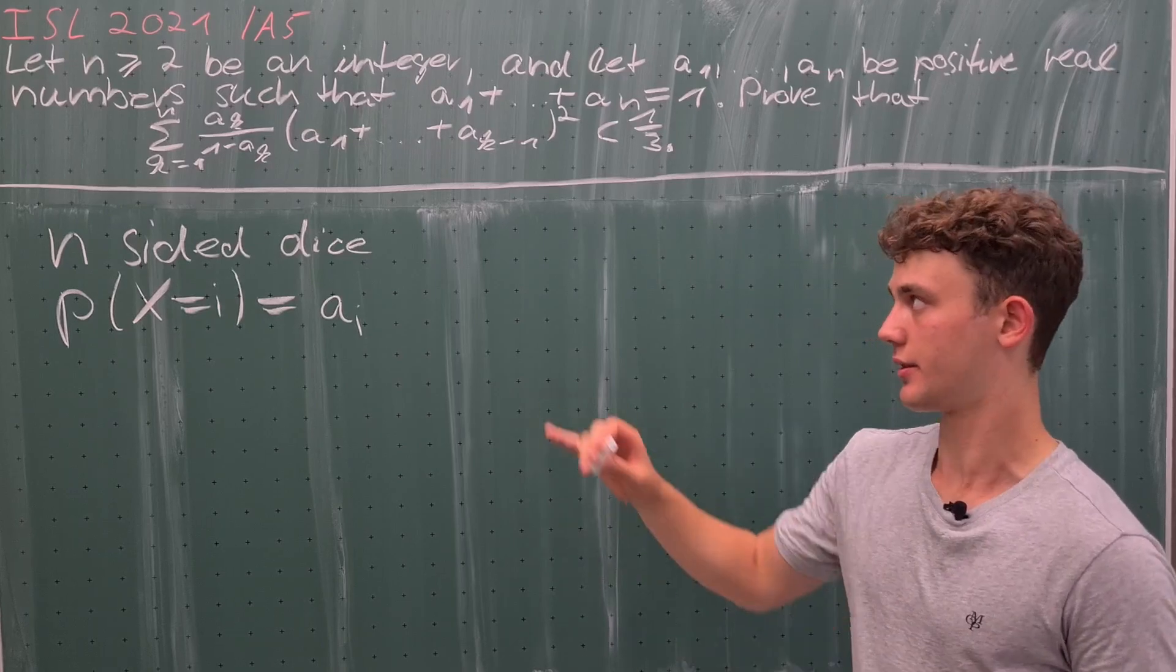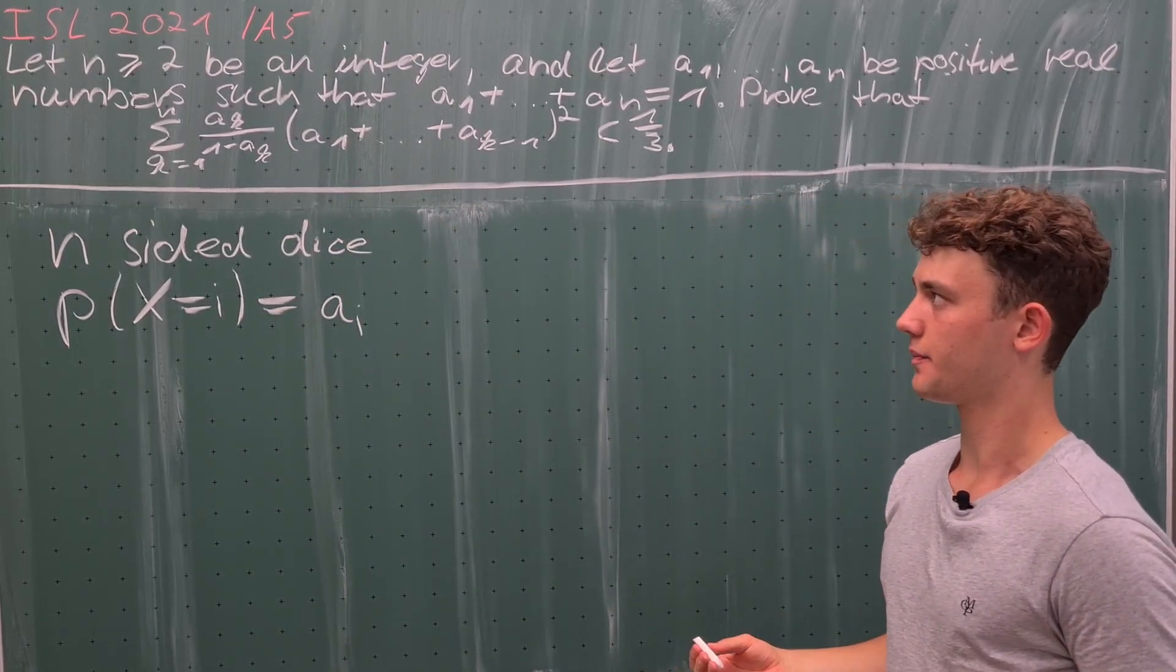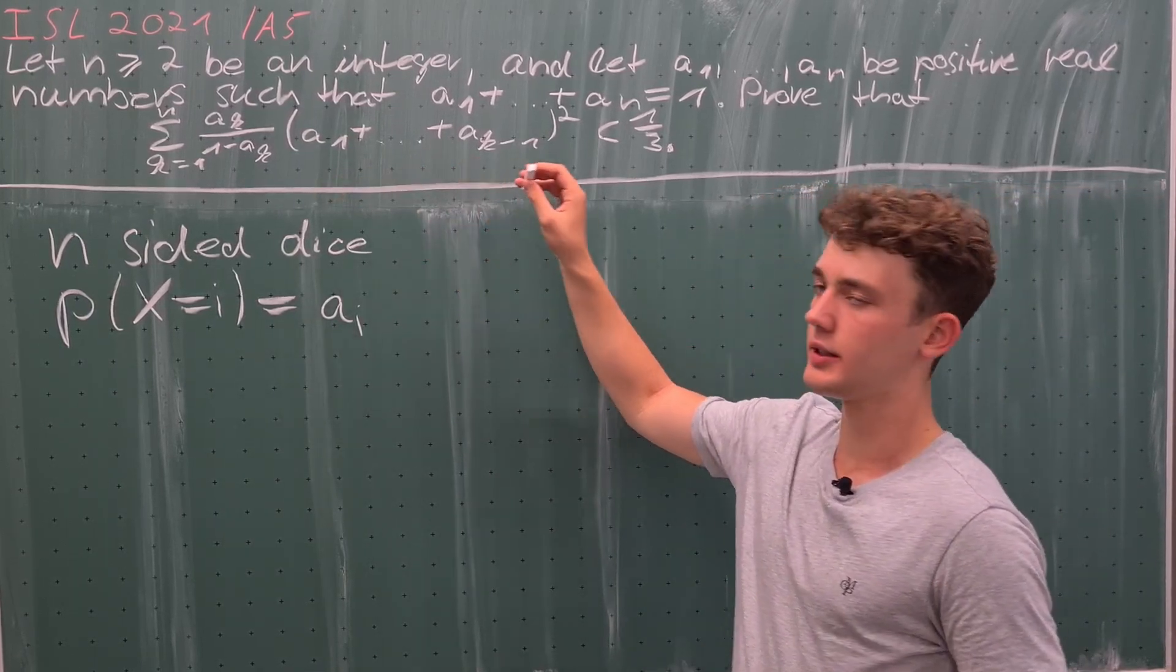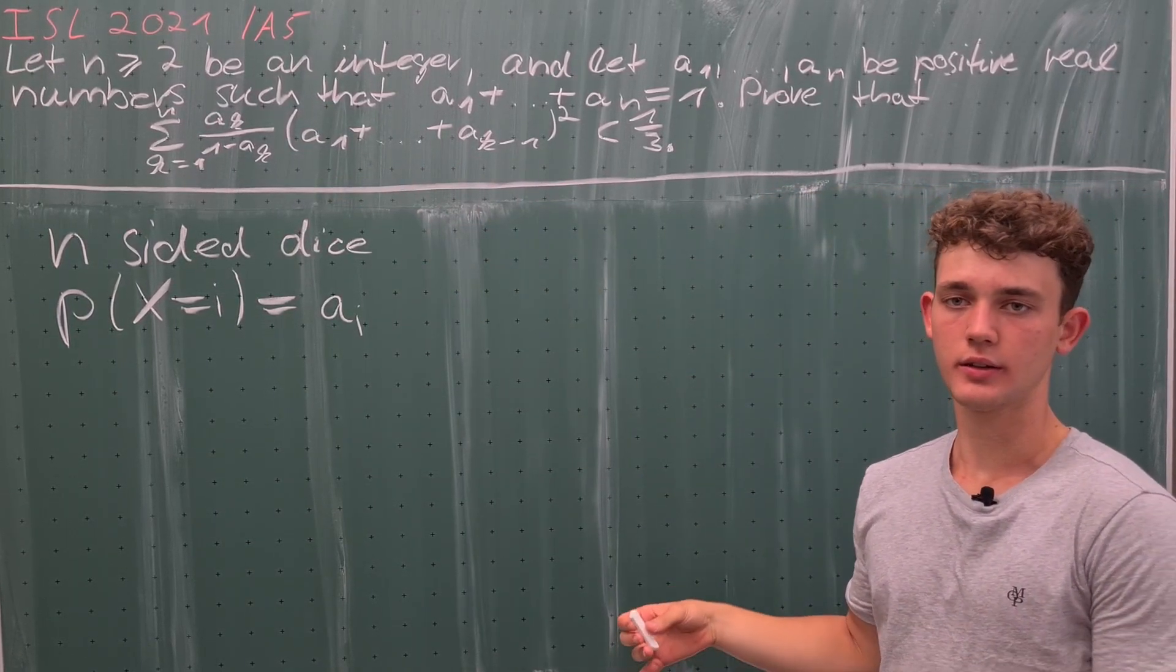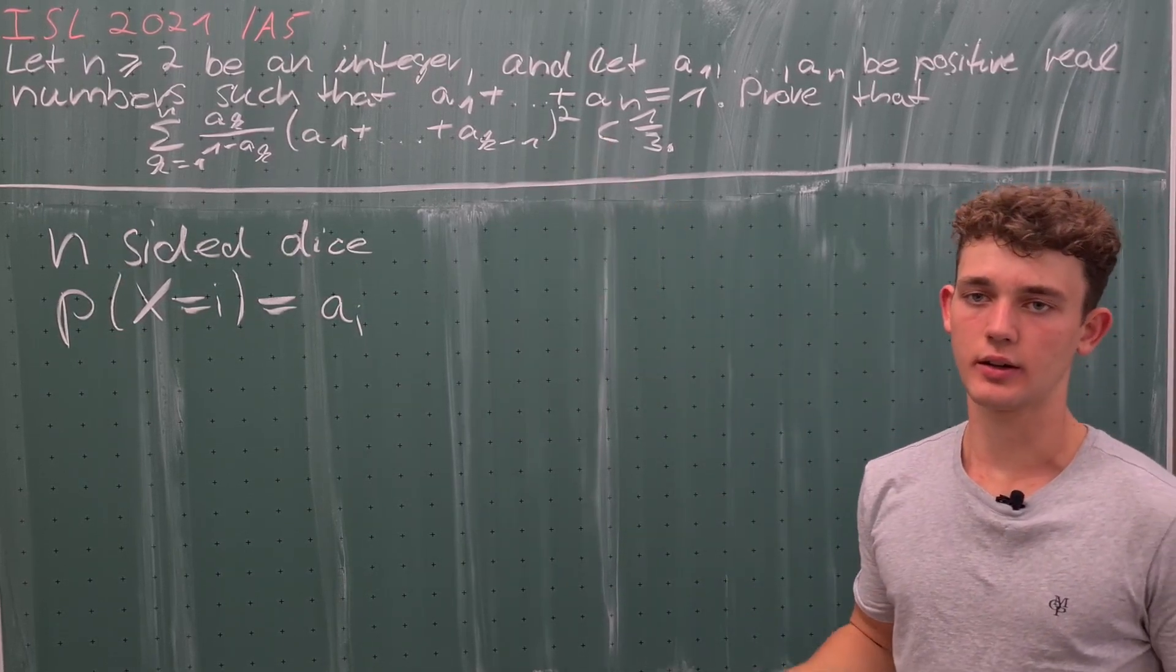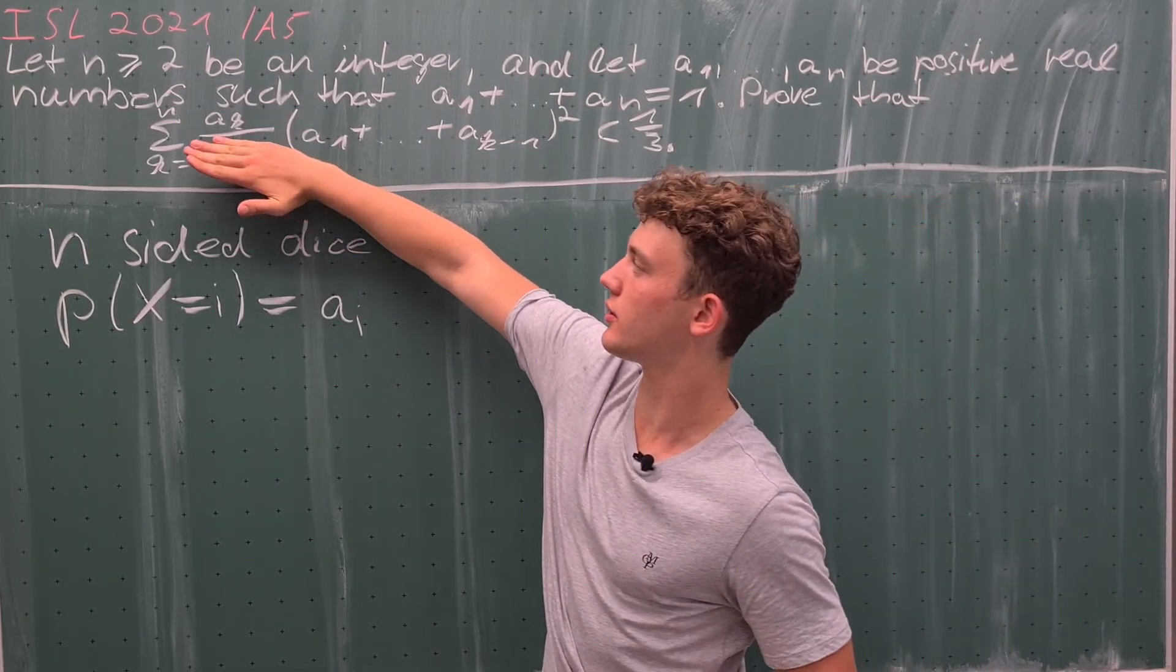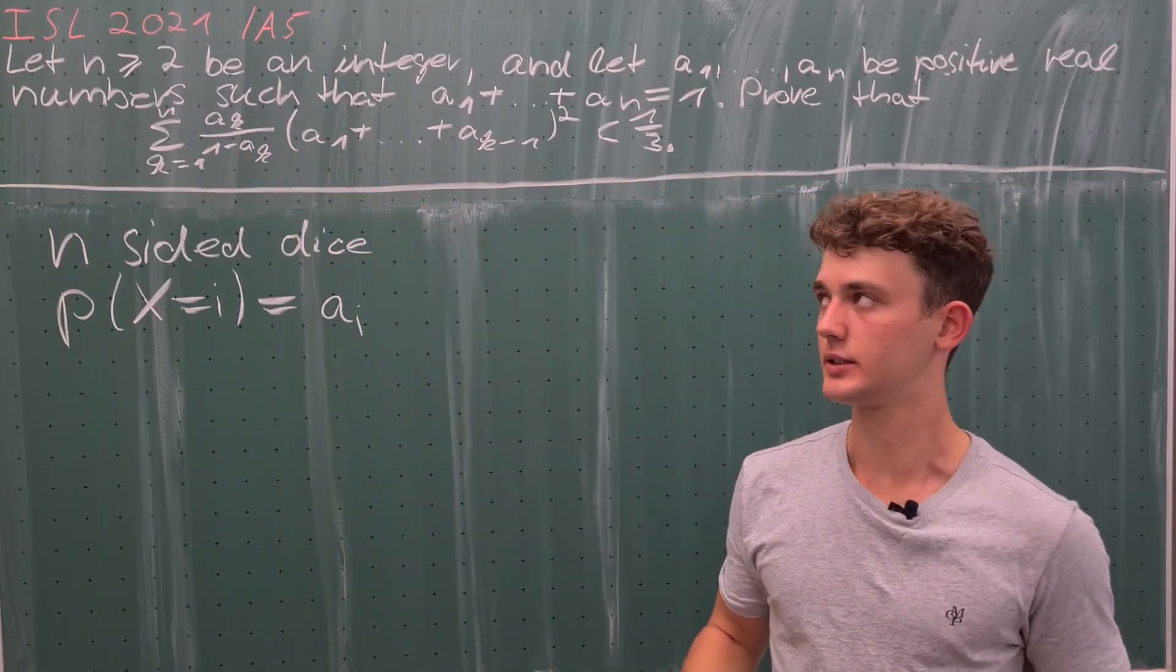To do this, let's have a look at this term. a_k is the probability of rolling the number k. Furthermore, this sum right here is the probability of rolling a number which is just lower than k, and squaring it can be interpreted as doing this twice.